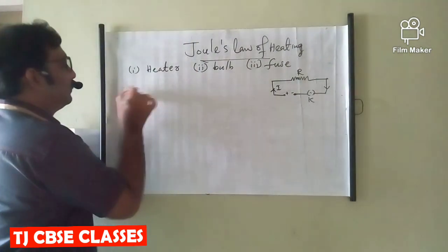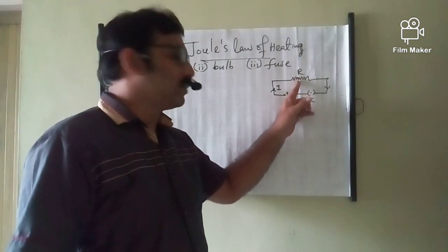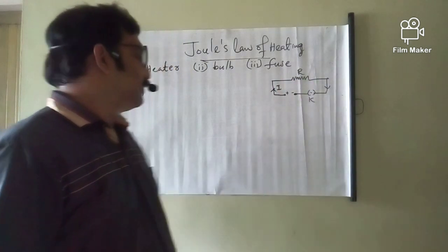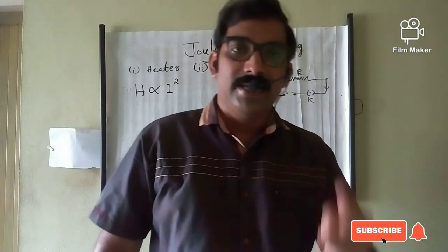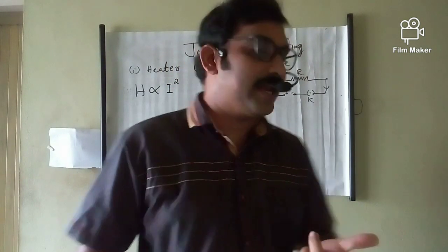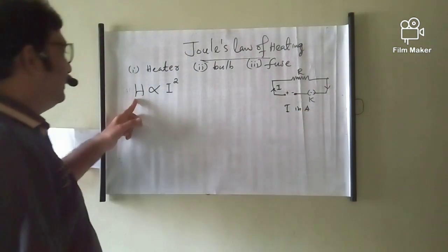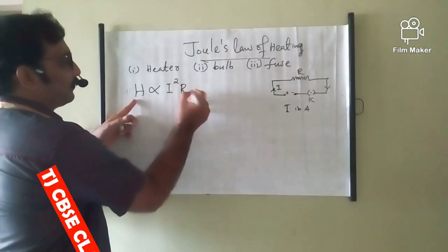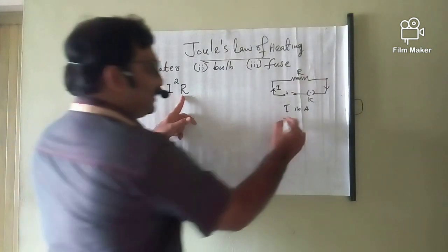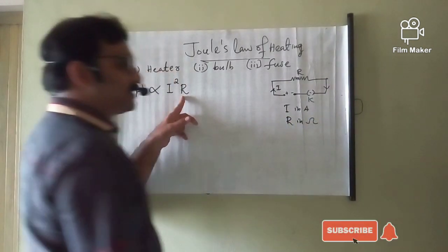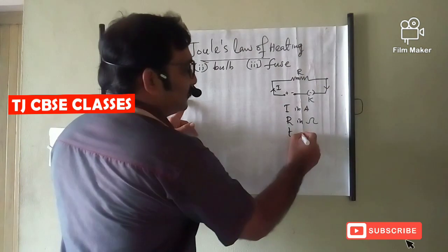Due to the current flowing through this resistance wire, some heat energy is radiated. That heat energy can be represented as H. The heat energy developed inside the conductor or resistance wire is directly proportional to I square — the square of intensity of the current in ampere — and directly proportional to the resistance of the wire in ohm, and directly proportional to time in seconds.